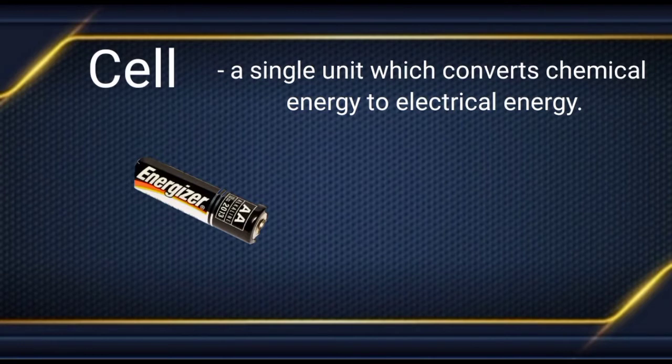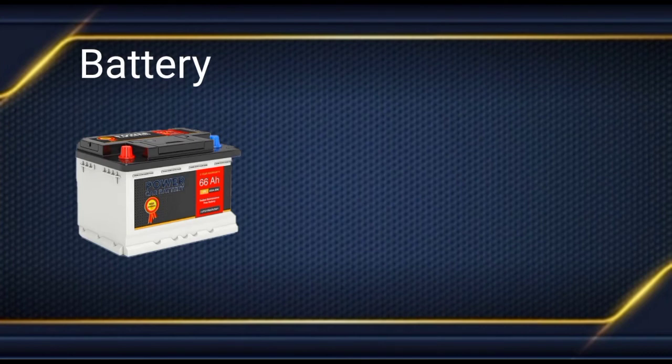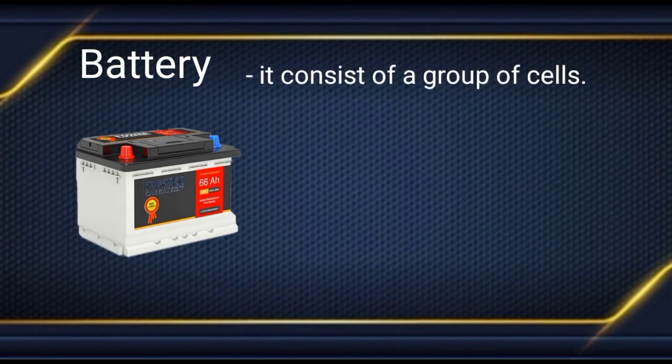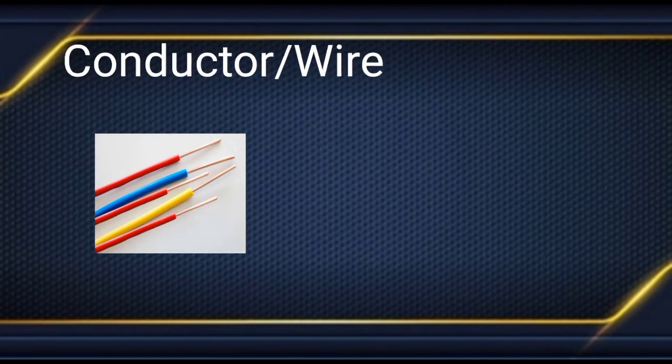We also have the cell — a single unit which converts chemical energy to electrical energy. We usually use this in the remote controls of our appliances, and this is the symbol. Next, we have the battery, which consists of a group of cells. We use this in appliances that require higher voltage, and we also use it in our cars. And this is the symbol.